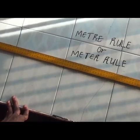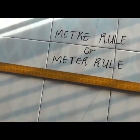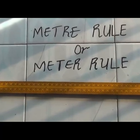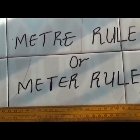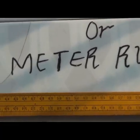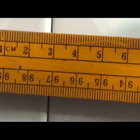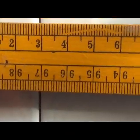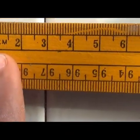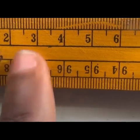The meter rule is the measuring instrument used in the physics laboratory to measure the length of various objects. The device is calibrated from 0 cm, which has chopped off, you see 1 cm, 2, 3, up to the end of it.